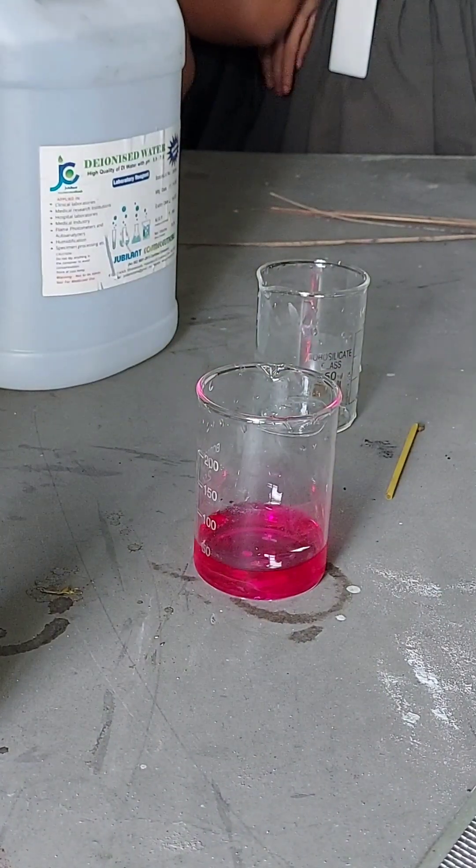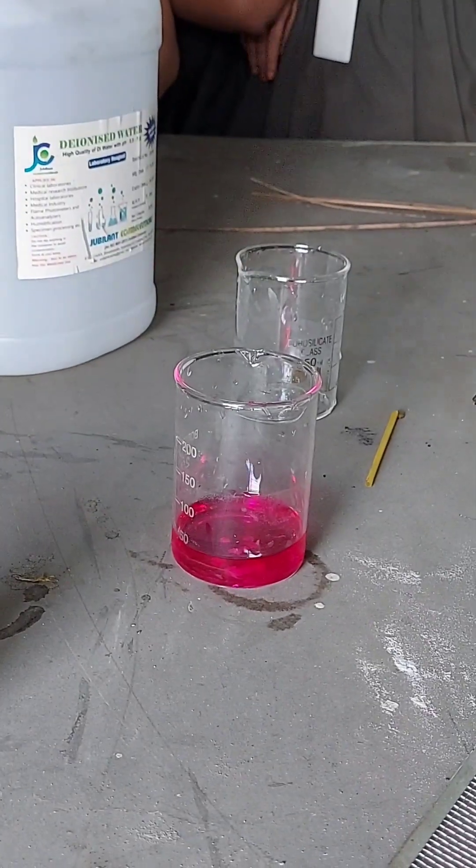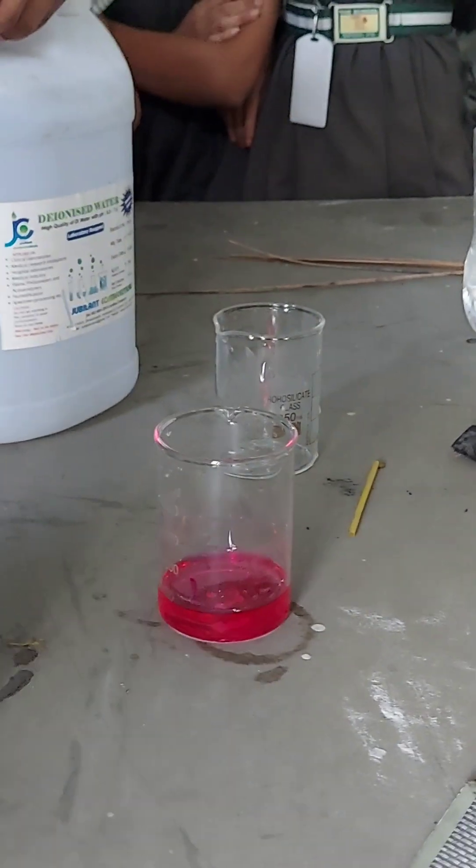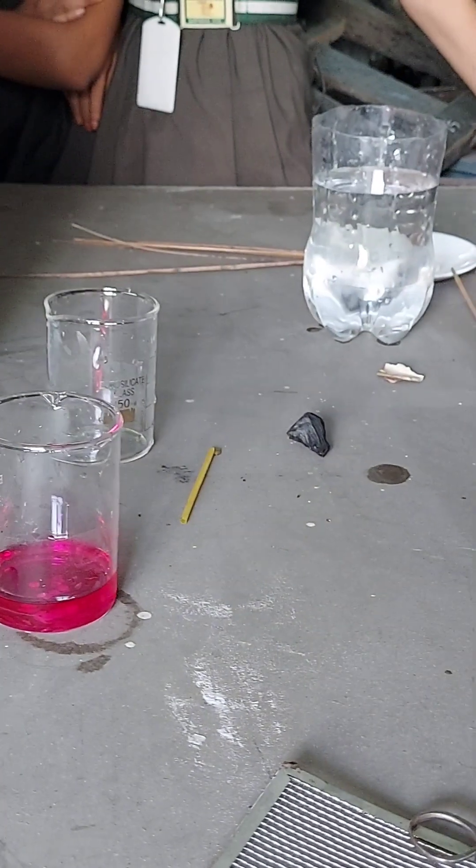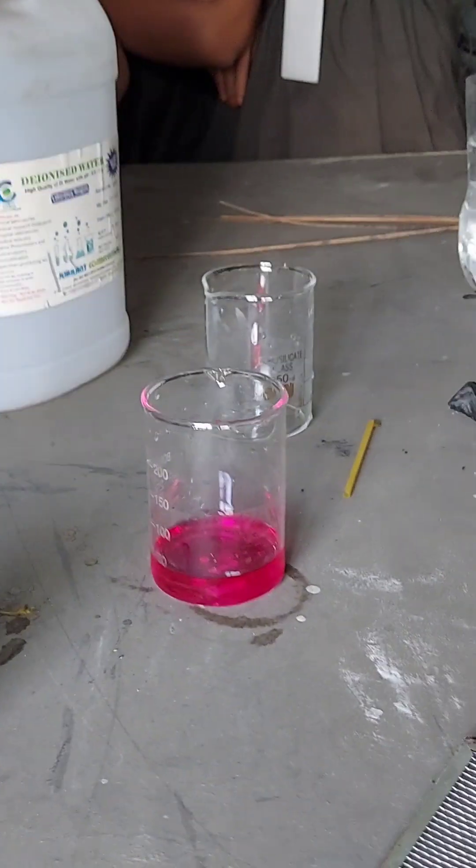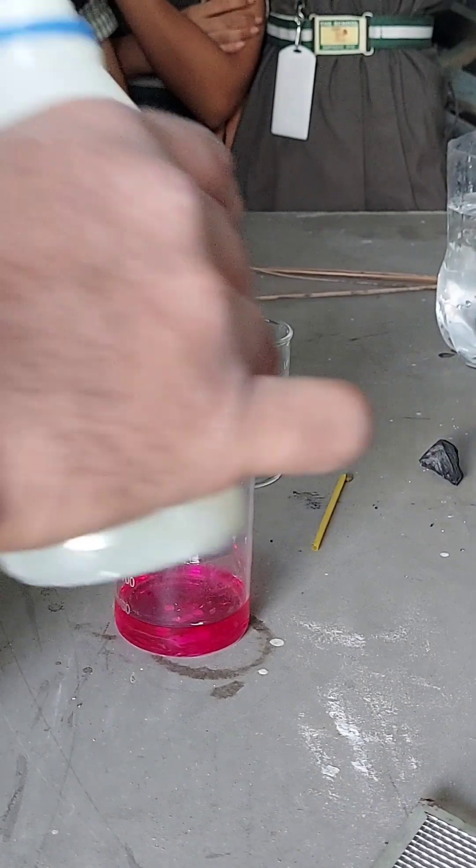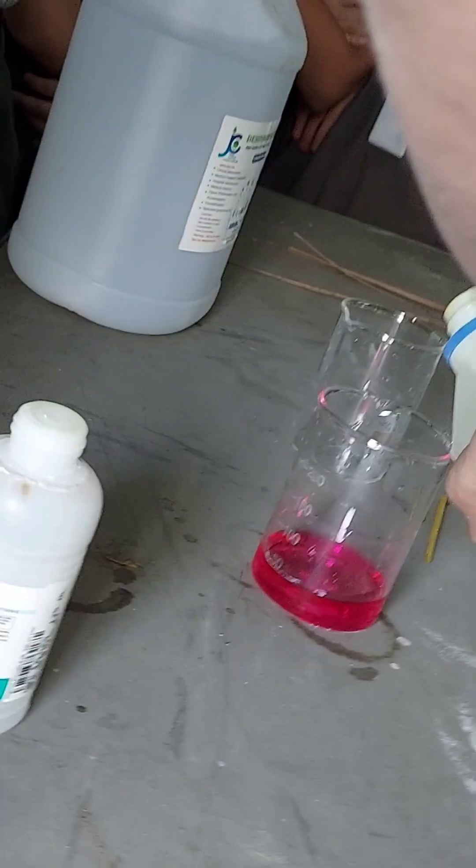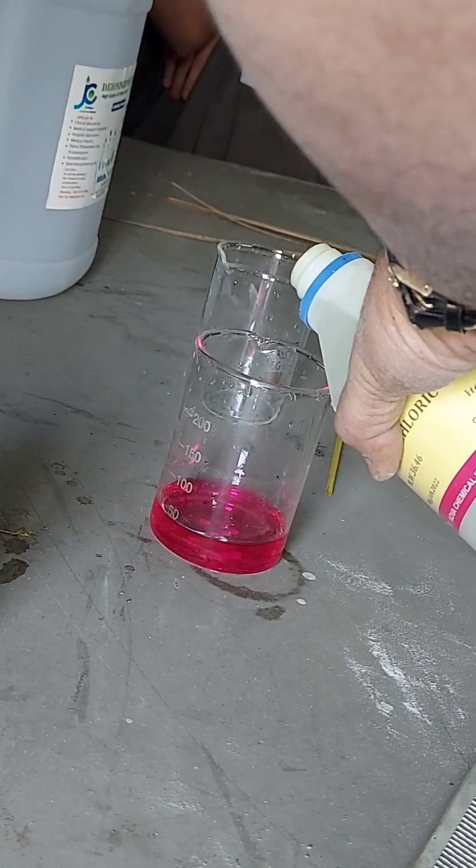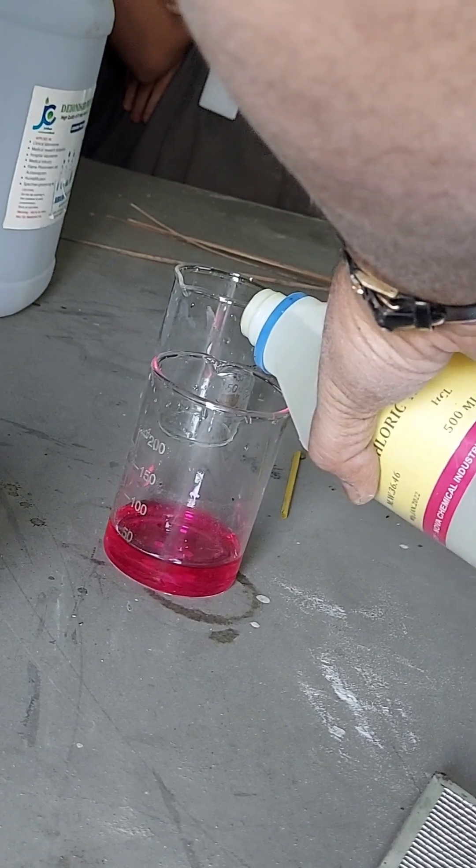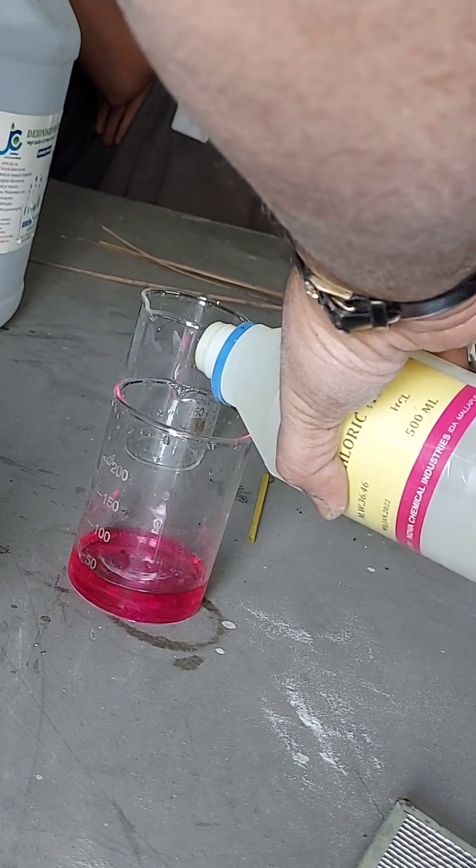Now if we add acid to this one, it will be colorless. So what will we do? We will take one acid. Sulfuric? No, no, no. Hydrochloric acid. Actually we should use a dropper, but we can directly add it. We will try to do it slowly.